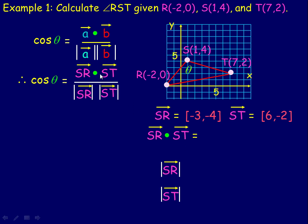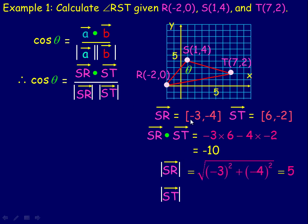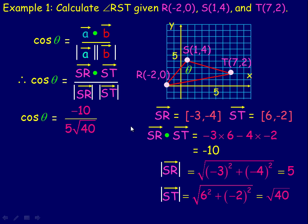Using the formula from the previous page with vectors SR and ST in place of A and B, we calculate the dot product in the numerator: (−3)(6) + (−4)(−2) = −18 + 8 = −10. The magnitude of SR is √(9 + 16) = √25 = 5. The magnitude of ST is √(36 + 4) = √40.